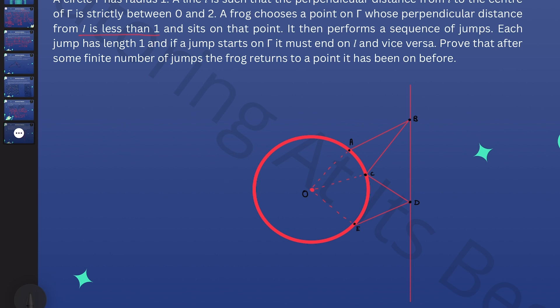Now the frog is going to jump between the circle and the line, alternately always jumping a distance of exactly 1. The point of the problem is to show that eventually the frog is forced to return to a point where it previously visited, and it's going to go back to its original launch point.